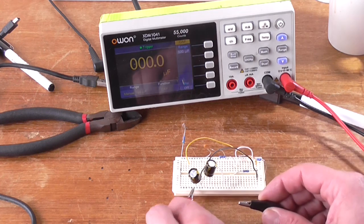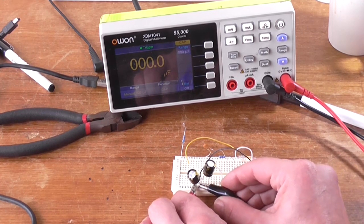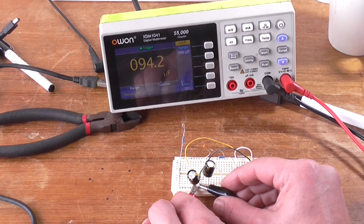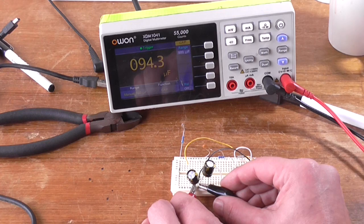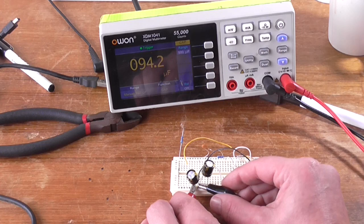But if I put my connection points of the meter across one of these capacitors and wait for it to range, there we go. We can see as the capacitor charges up we've got roughly 94 microfarad. Okay fair enough.